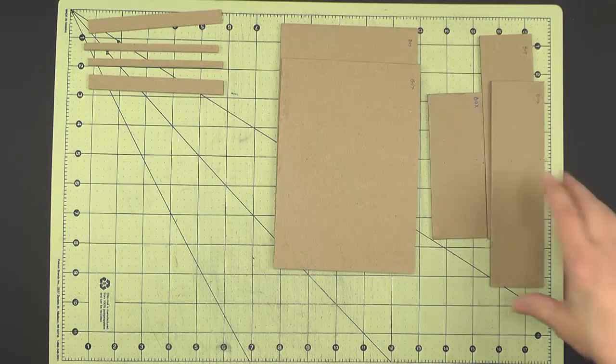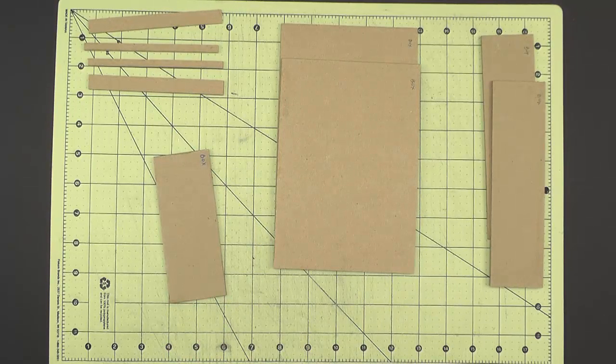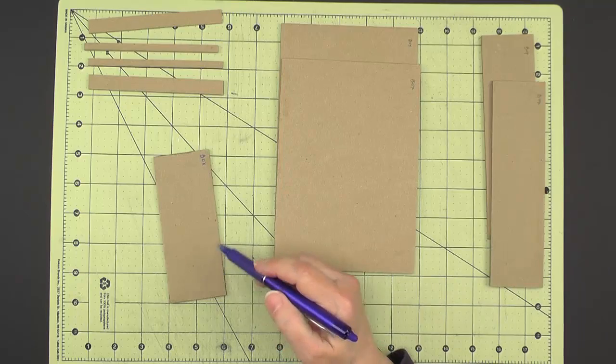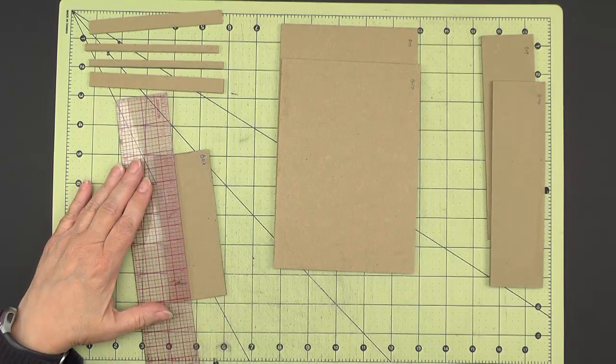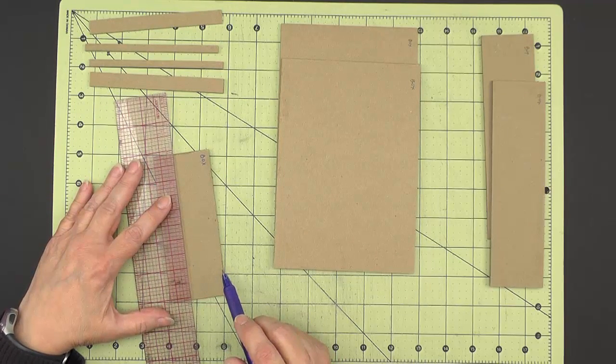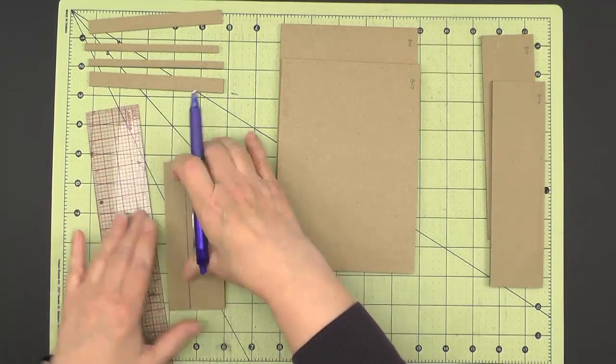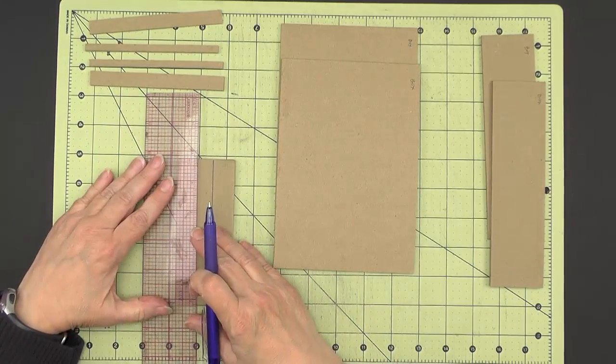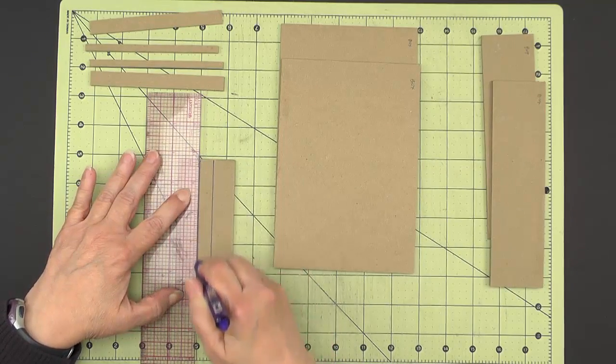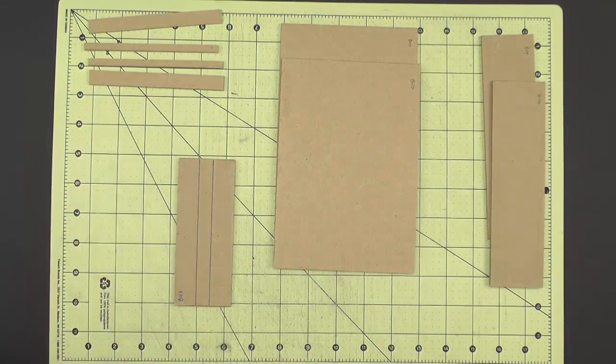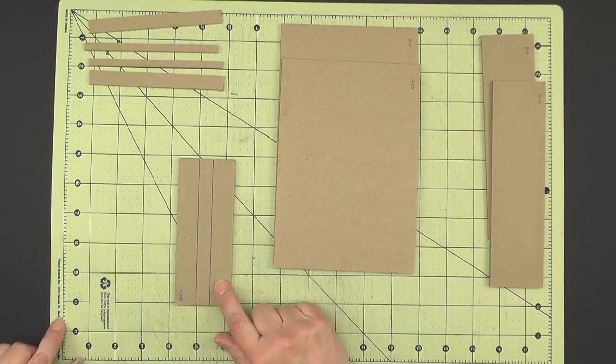Now before we do our glue up, we want to put some lines on our box end here, and that is so that we can line up our channel piece on it after it's constructed. And that channel is a half inch wide, and our end is an inch and a half wide. So if we draw a line 3/4 of an inch from either side, that will give us a placement for our half inch channel.